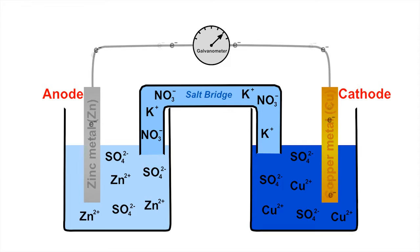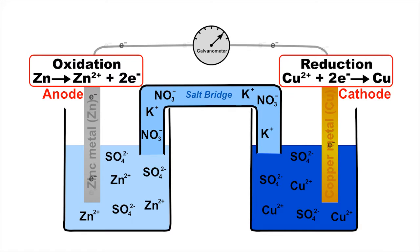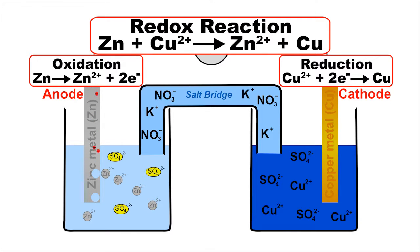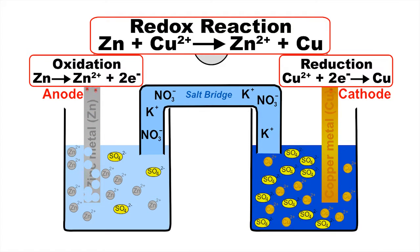Overall, this dual process of oxidation and reduction, known as a redox reaction, results in the zinc electrode slowly being eaten away, as zinc atoms lose electrons and enter solution as positively charged zinc ions. While at the copper electrode, there is a build up of filaments of copper metal, as positively charged copper ions gain electrons, coming out of solution as atoms of the metal copper.